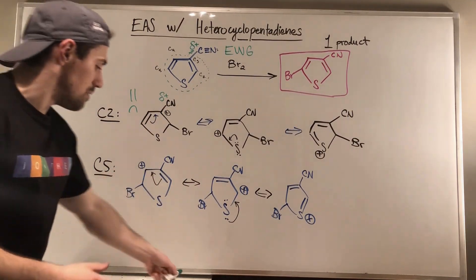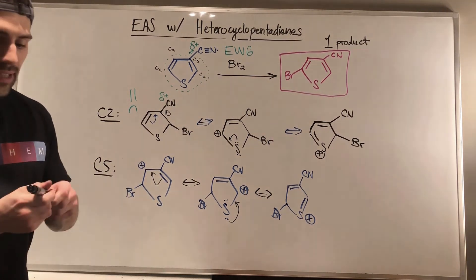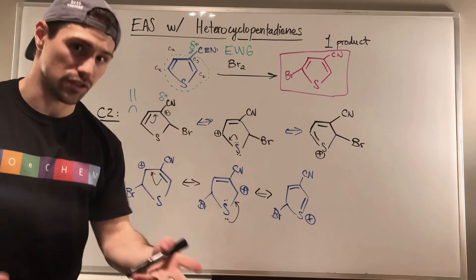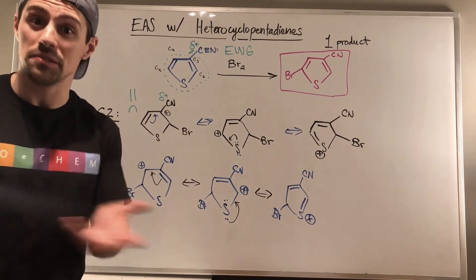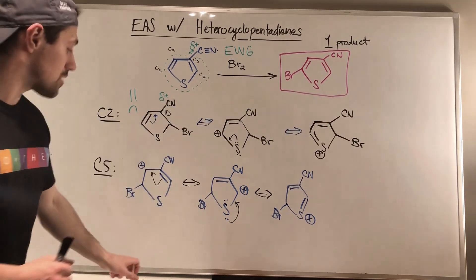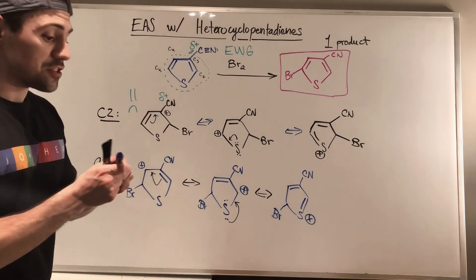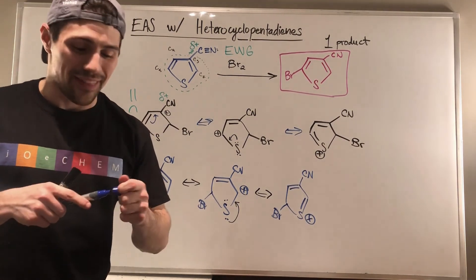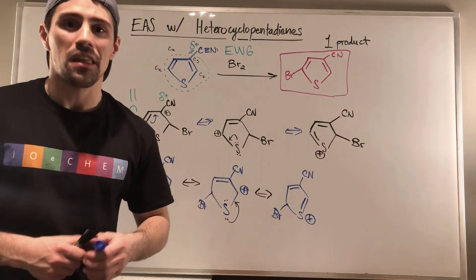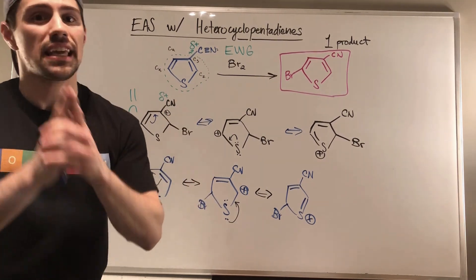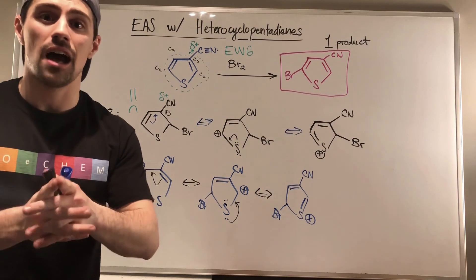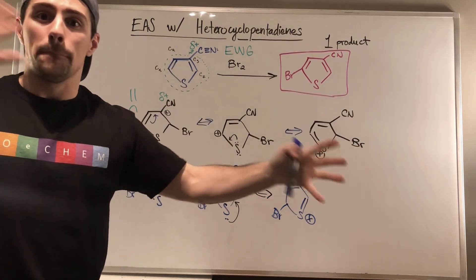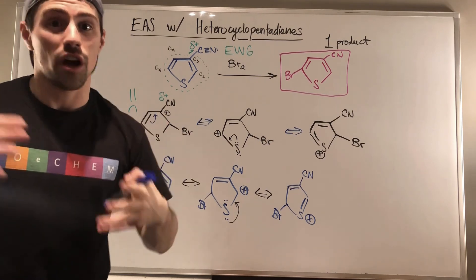There was really nothing different based on the new knowledge we learned — that was analysis you could have done when you learned EAS the first time around. But it's important: we drew back from our prior experience because we needed to recognize that nitrile was an electron-withdrawing group and that like charges repel. Thank you for taking yet another trip down memory lane — this time combining our previous EAS knowledge with our brand new knowledge of heterocycles.